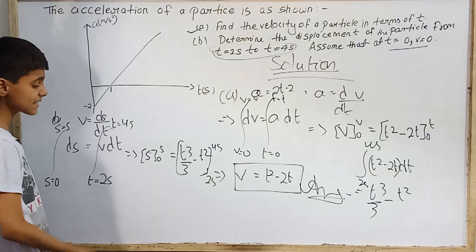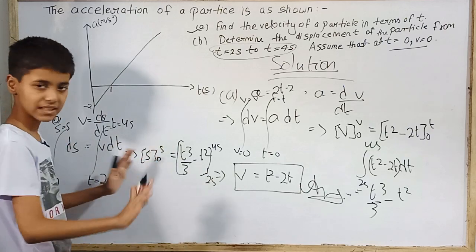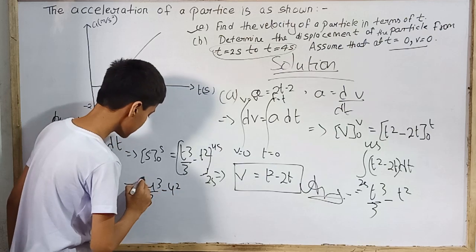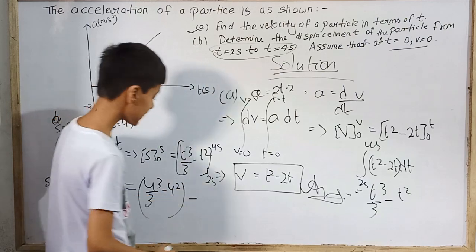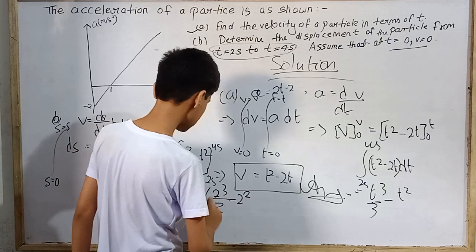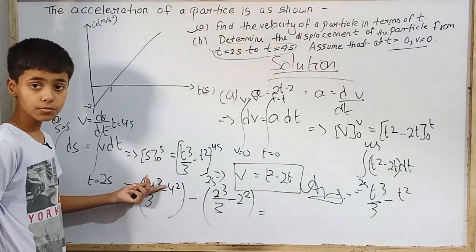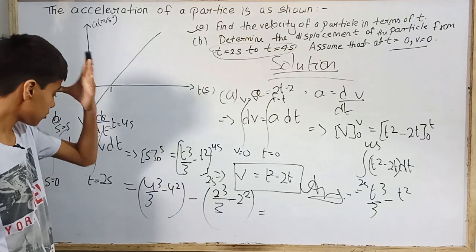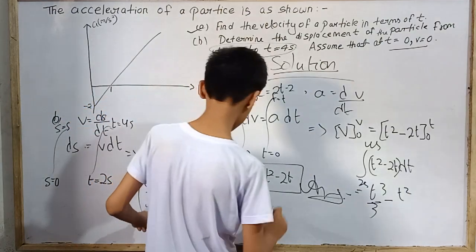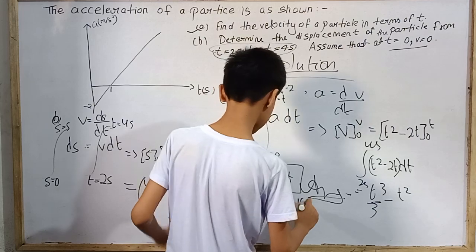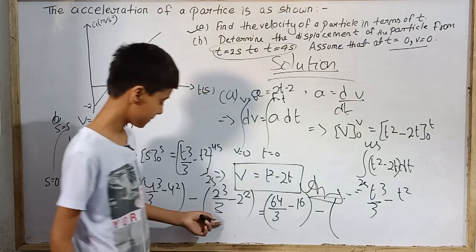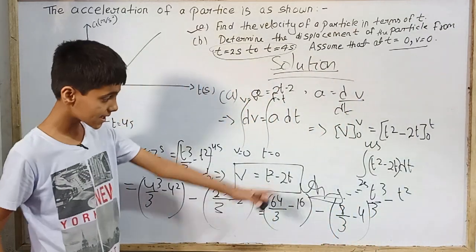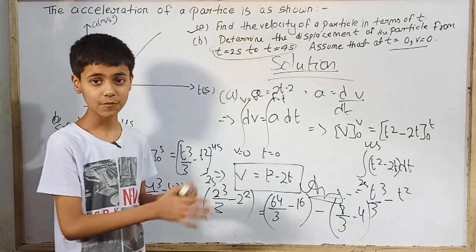From 0 to s will be s itself. This is equal to: first we have 4 seconds value, 4 cube by 3 minus 4 square. Now subtract, putting the values of 2 seconds: 2 cube by 3 minus 2 square. Trying to solve the expressions: 4 cube is 64, so 64 by 3 minus 16, minus 8 by 3 minus 4. We have got so many values and the board is filled, so we are going to pause the video and erase this.